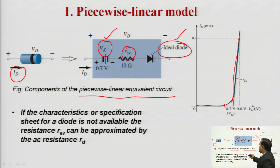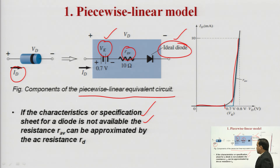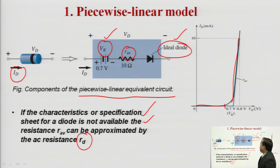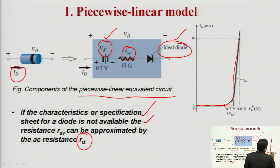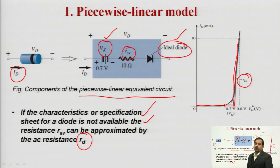If the characteristics or specification sheet for a diode is not available, then the average resistance R_AV can be approximately equal to the dynamic resistance of the diode, represented by small r_d. The characteristics will resist up to a voltage of 0.7 and after that the piecewise linear characteristics will have a slope — that is why we have a resistance of R_AV.